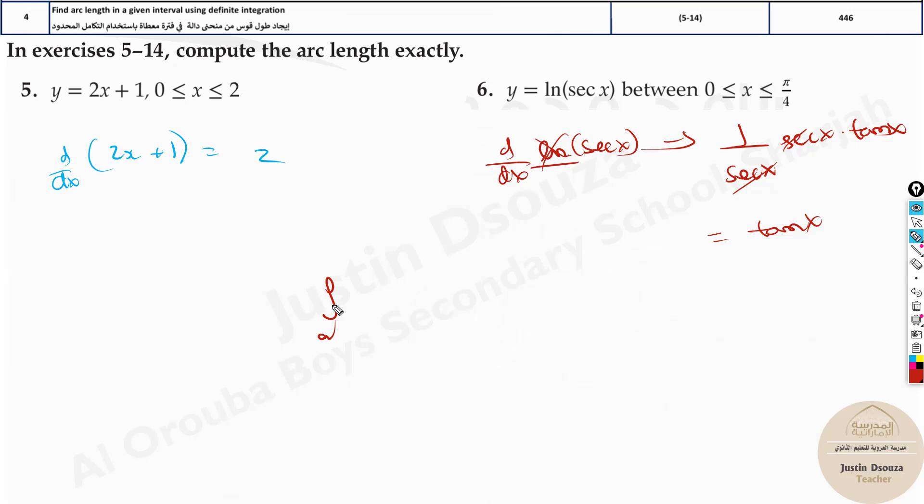And now you use this in the formula. The formula is integral a to b square root 1 plus f prime or f dash of x the whole square dx. Just substitute this equation, this one over here.